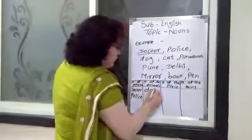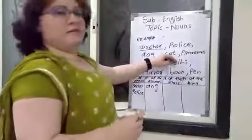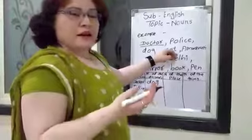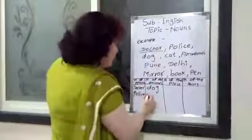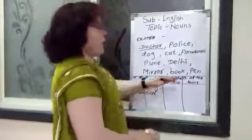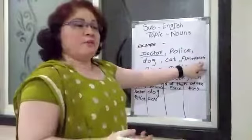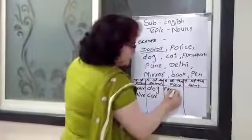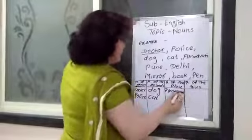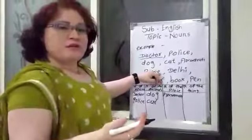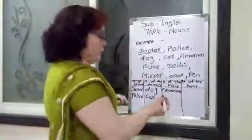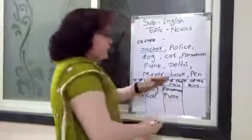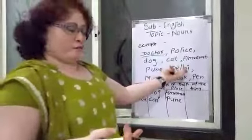Cat is not a person, not a place, not a thing. Cat is an animal. Amravati — Amravati is a place. Pune is a big city, everyone knows that — Pune is the name of a place. Delhi is also a place.